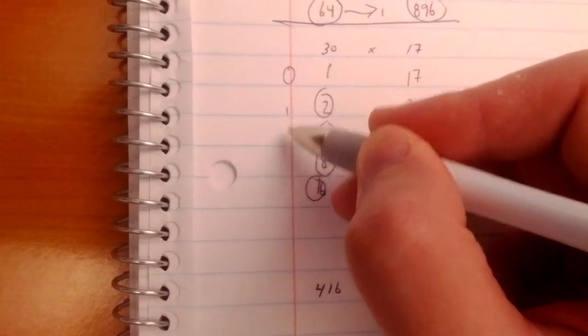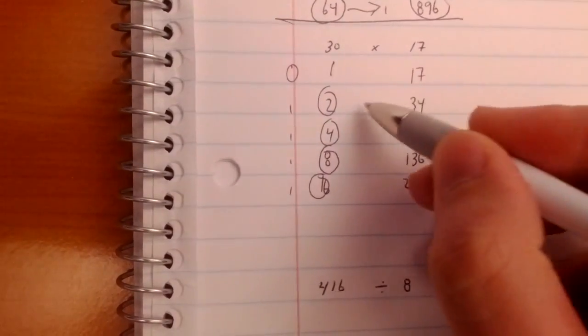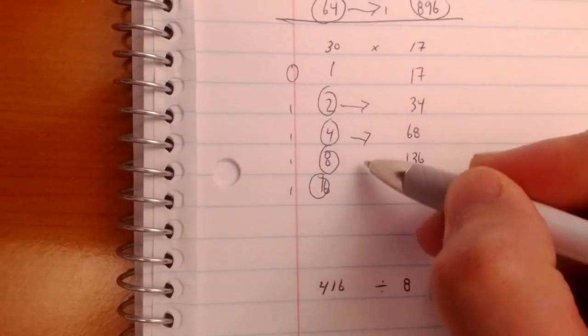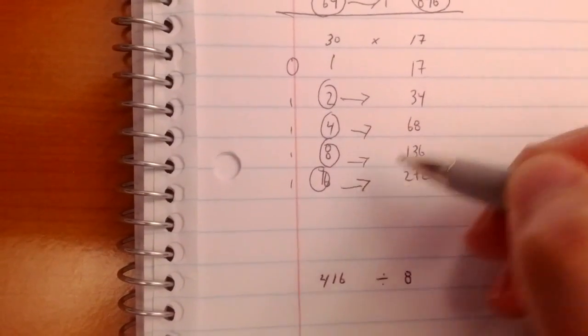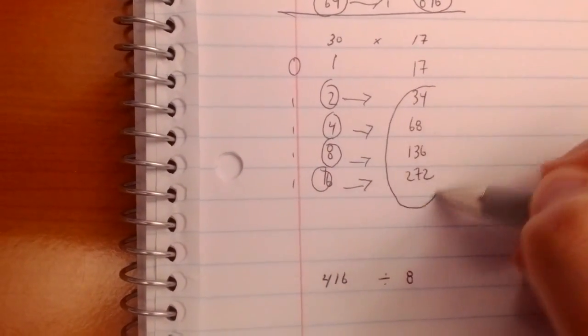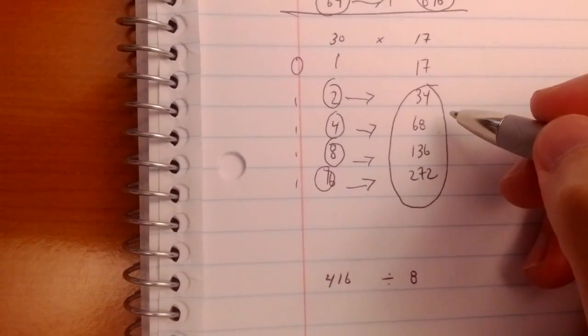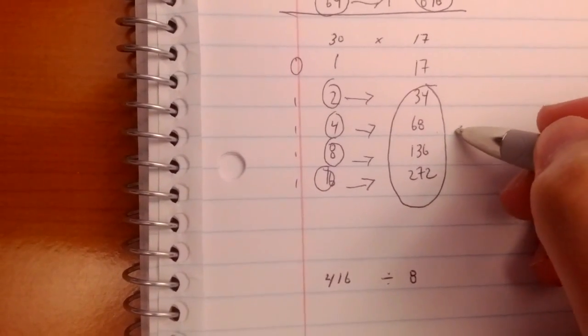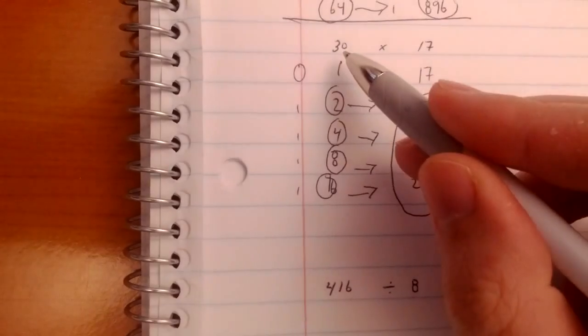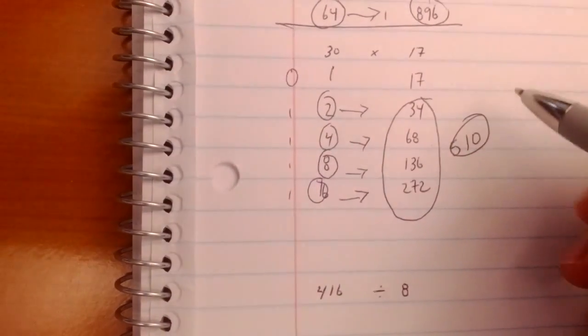So, off, on, on, on, on if you were a computer. All you need to do is sum those up. You do that math, and you get 510. 30 times 17 is 510.